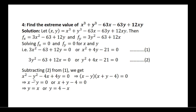Simplify this: x squared minus y squared can be written using the A minus B into A plus B formula, so taking x minus y as common gives x minus y into (x plus y minus 4) equal to 0. Therefore, either y equals x or y equals 4 minus x.